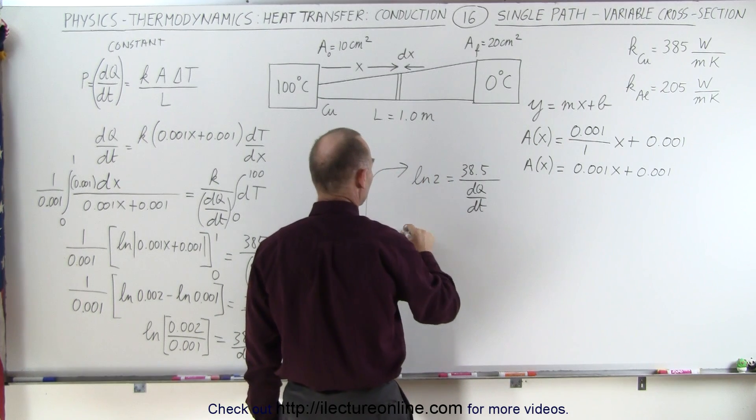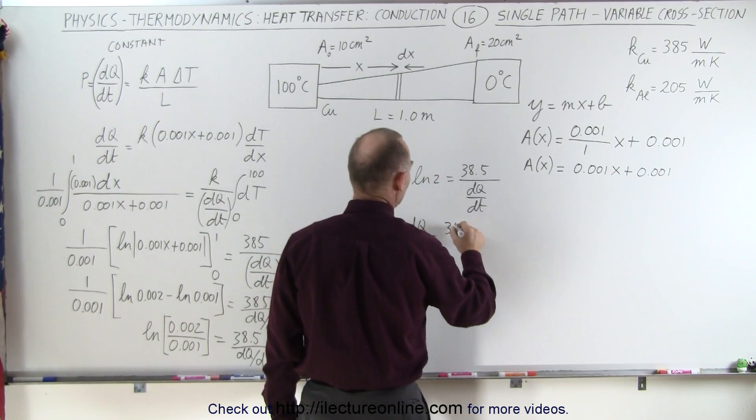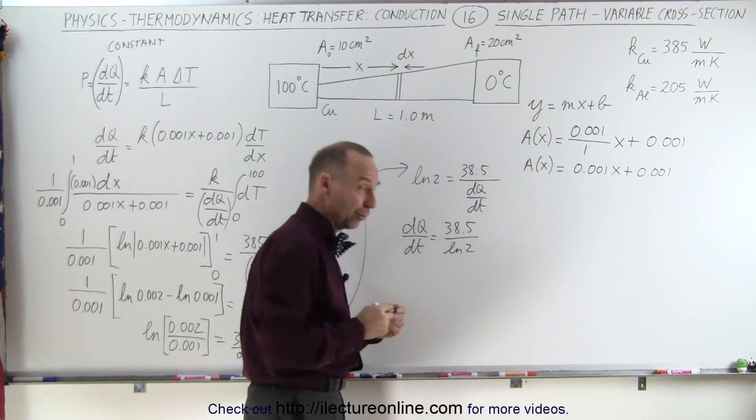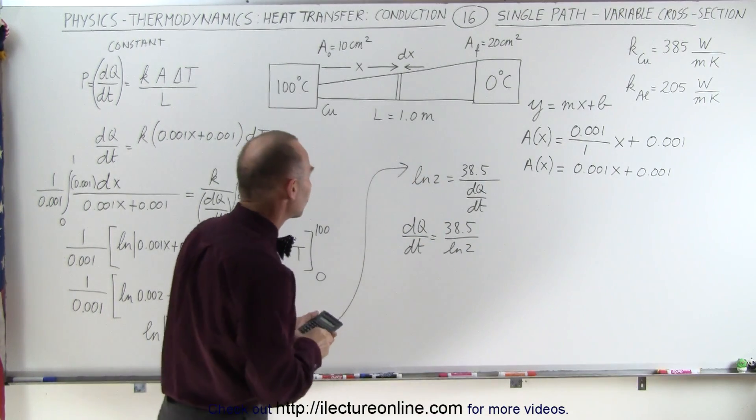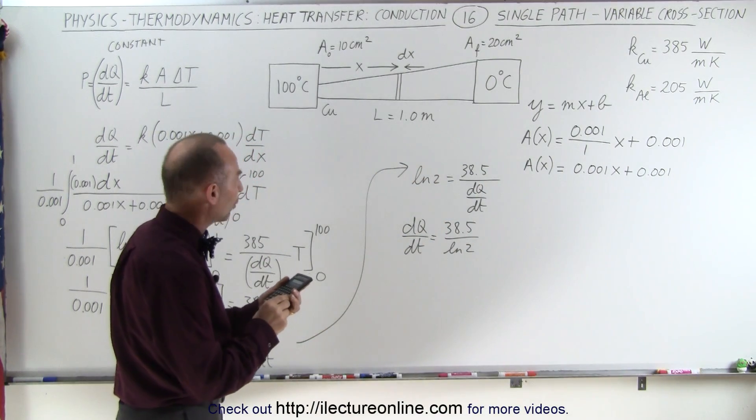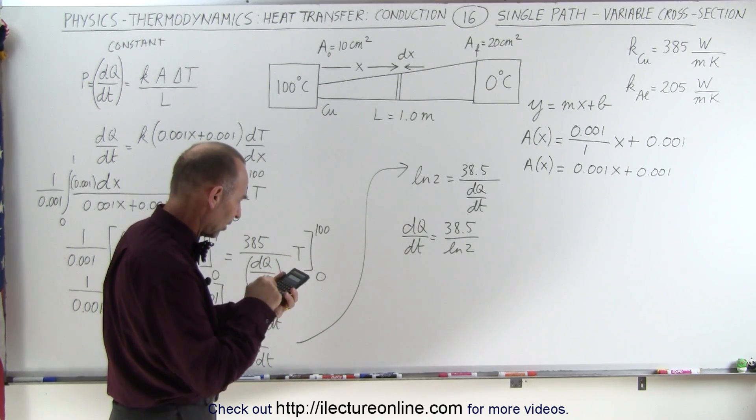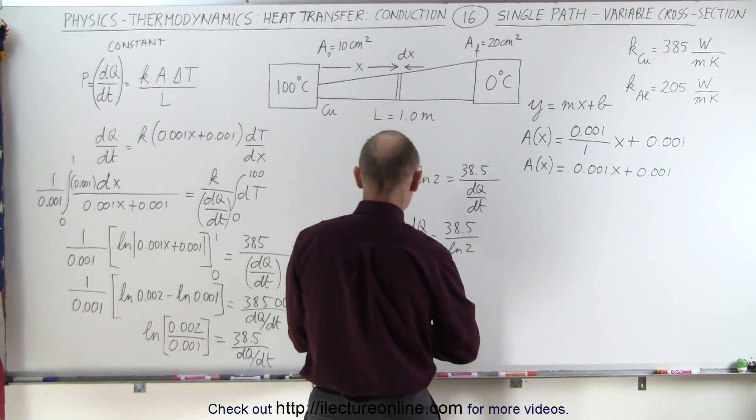Or, since we're looking for dQ/dt, dQ/dt is equal to 38.5 divided by the natural log of 2. And of course, the units of that will be in watts. That's the heat transferred per unit time or joules per second. So 38.5 divided by the natural log of 2, and we get 55.54.